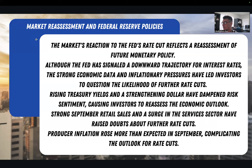There was also a market reassessment. When you dive into the Federal Reserve's policies, although the Fed signaled a downward trajectory for interest rates, strong economic data and inflationary pressures have led investors to question the likelihood of further rate cuts. Rising treasury yields and a strengthening dollar have dampened risk sentiment. When you look at the DXY — the U.S. dollar index — that thing has been ripping, going up six, seven, eight weeks almost consecutively on a very strong uptrend, which is typically a headwind for things like gold or even the stock market.